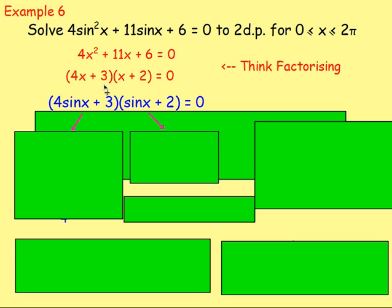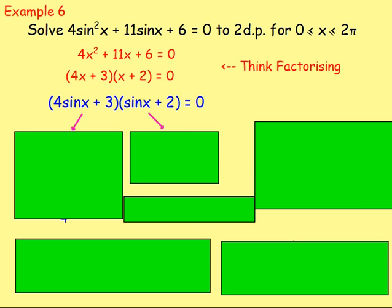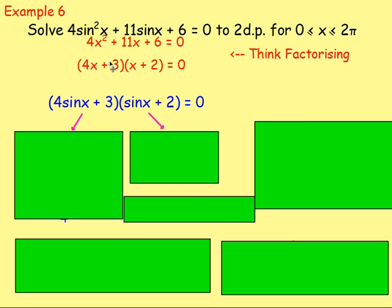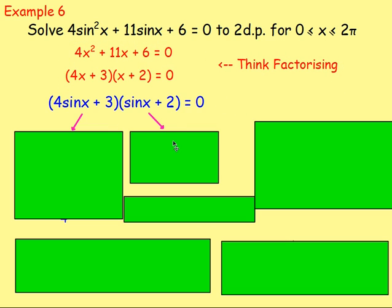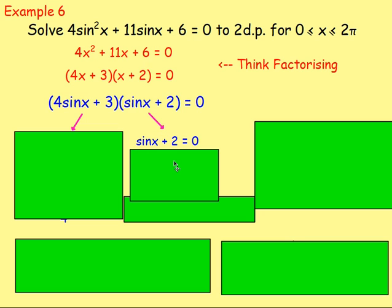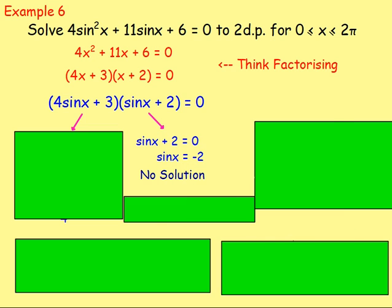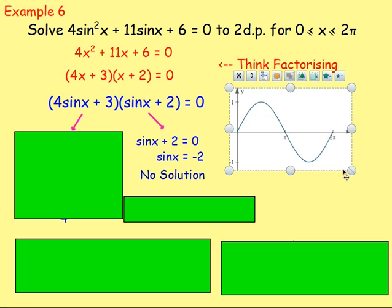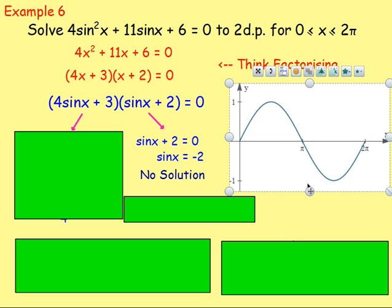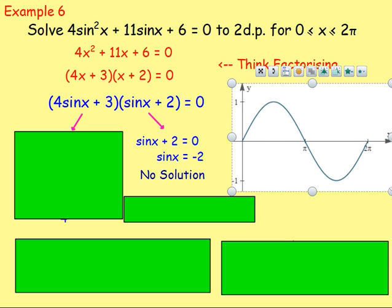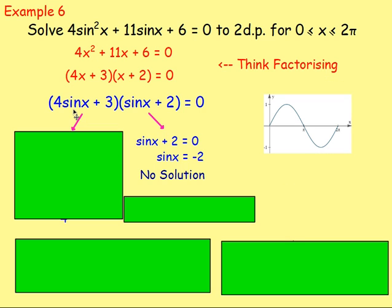Rewrite it as (4sinx + 3)(sinx + 2) equals zero. Go off to the side, factorize, then come back to your answer. Setting the right bracket equal to zero: sinx + 2 = 0, so sinx = negative two — no solution. The sine graph has a maximum of one and a minimum of negative one, so sine x cannot equal negative two. The smallest value is negative one, so we discard that bracket.